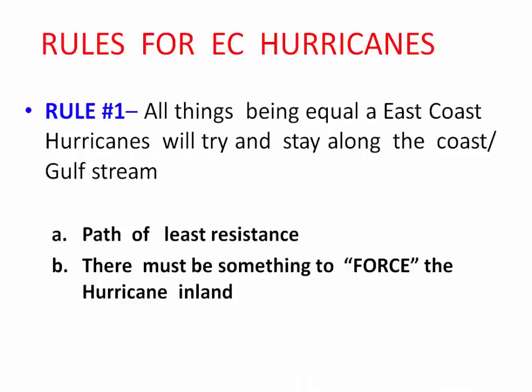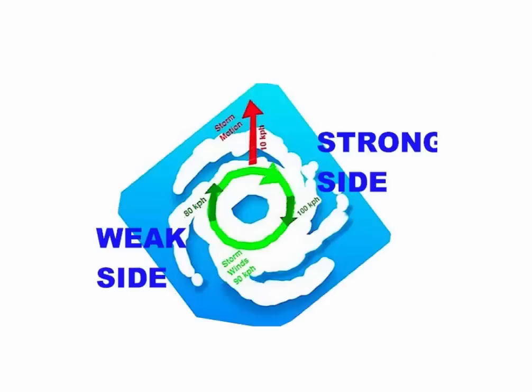Rule number one for East Coast hurricanes: all things being equal, an East Coast hurricane will try to stay along the coast or the Gulf Stream — the path of least resistance. In every case — no doubt about it — there must be something to force a hurricane inland. Sandy: something forced it inland. Donna: along the coast. Isabel 2003: forced inland. Hazel 1954: forced inland. There must be something in the atmosphere to force the hurricane inland; otherwise, it'll stay on the coast. I don't give a hoot in hell what the model says.